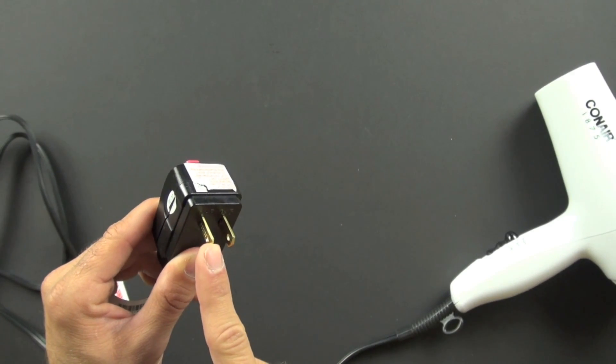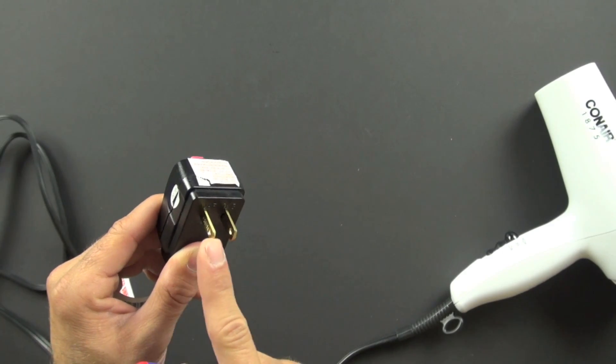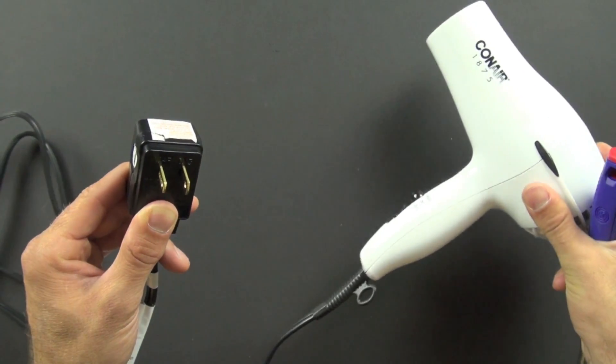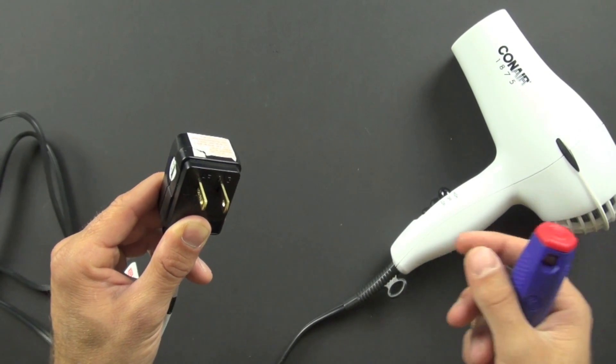It can tell if there's a power difference between these two prongs. And that power difference might occur when the hair dryer was, say, dropped in water or there was some sort of short that happened.